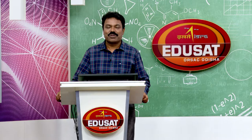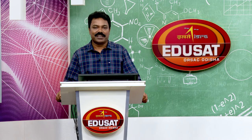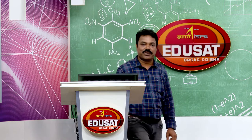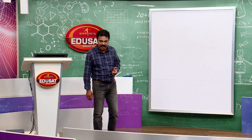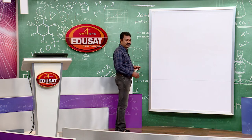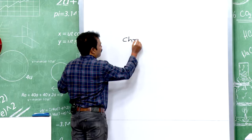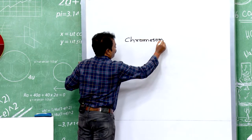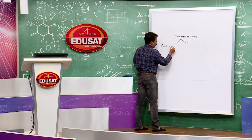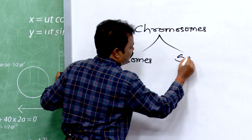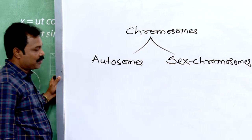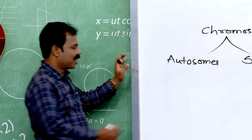So we can say chromosomes determine everything happening in your body. These chromosomes are of two types: sex chromosomes and autosomes. Autosomes are non-sex chromosomes that carry genes for somatic characters.